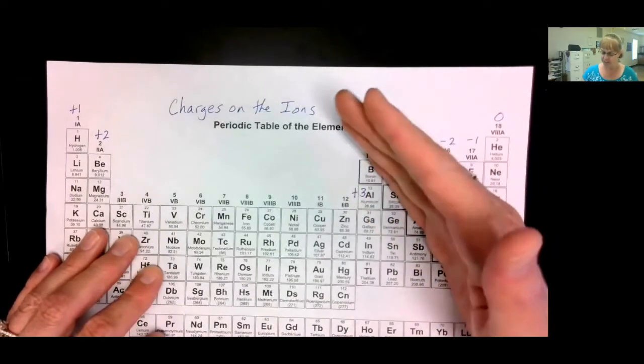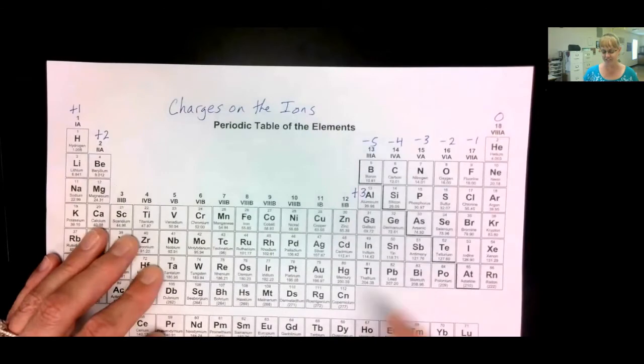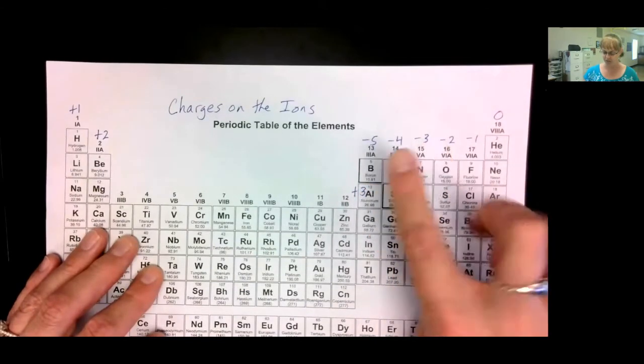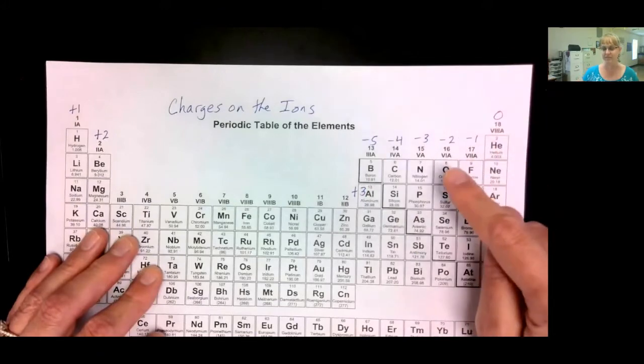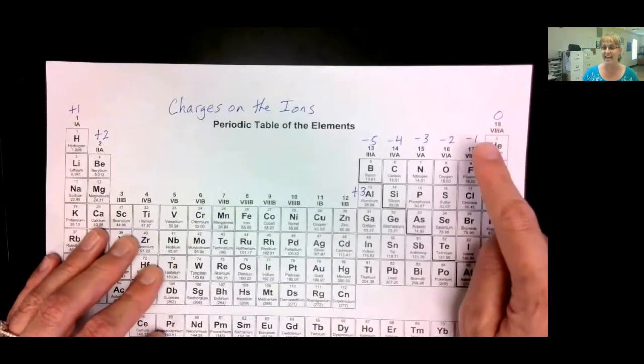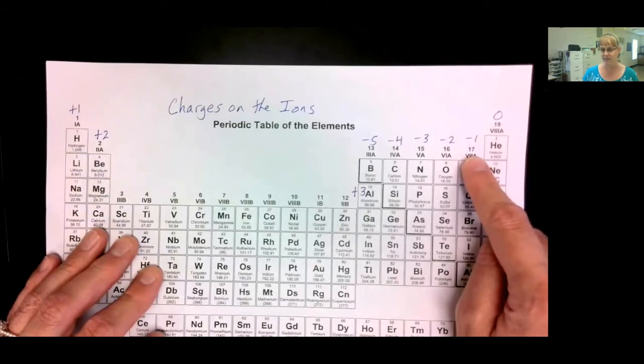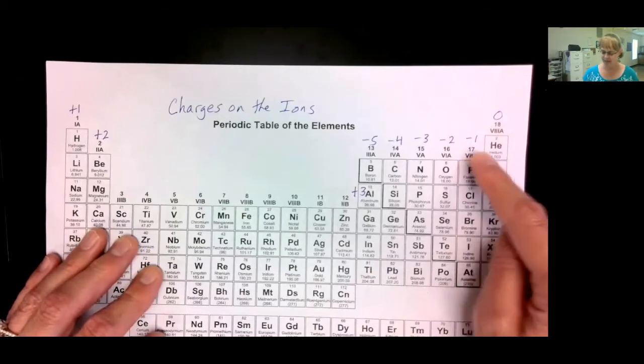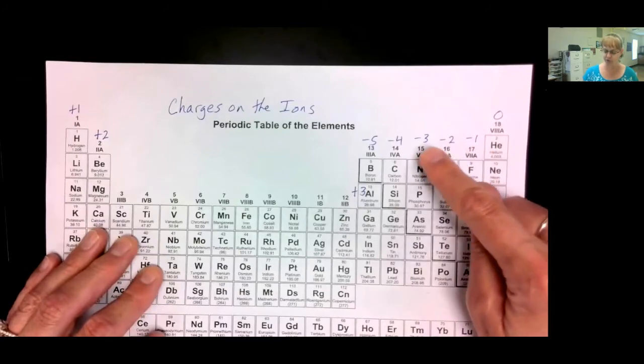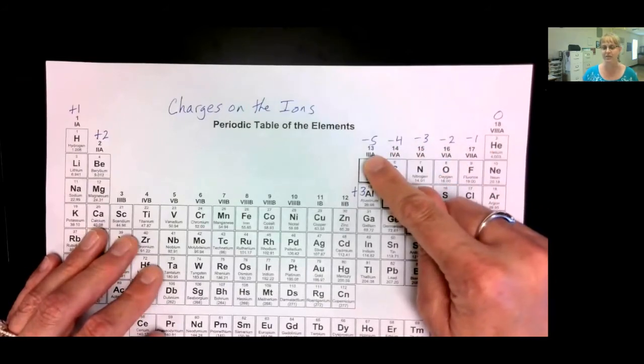If you lose two electrons or if you lose three. Remember, only the elements to the left of the stair step line will lose electrons. The ones to the right of this stair step line will gain. So, if you gain a negative electron, that's why it has a negative charge. See, it's backwards. Negative means gained. Positive means lost. And so, these lose one, lose two, three, four, and five to become like the noble gases.